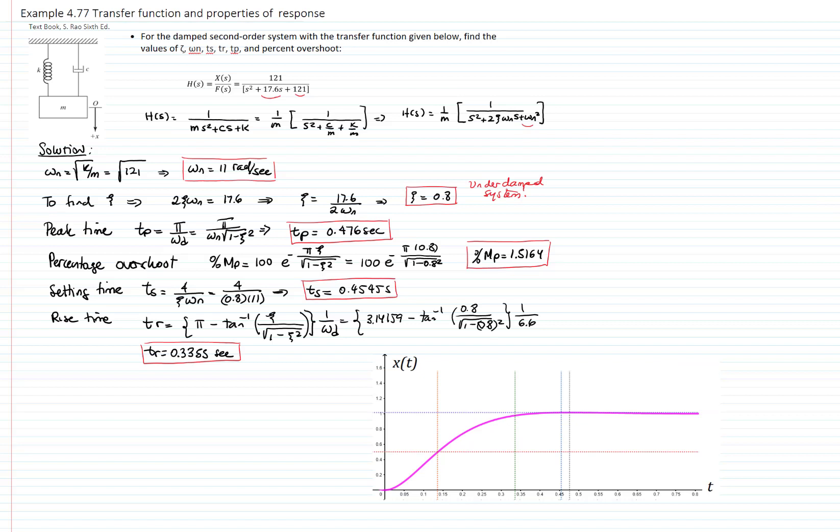I like to plot this response, and as we already commented, the value for the overshoot is very small. So here we have the 50% of the response, and then we have the peak time where the overshoot goes, and that's at 0.476 seconds. And then we have the settling time, which is 0.4545 seconds. We have the overshoot, which as I said is 1.51%, which is very small with respect to the steady-state response.